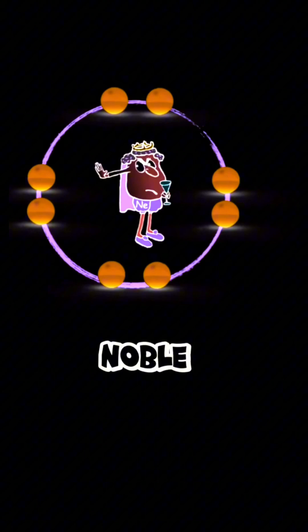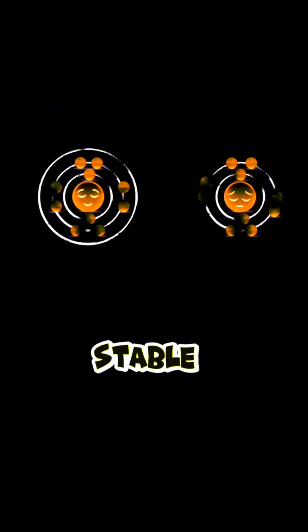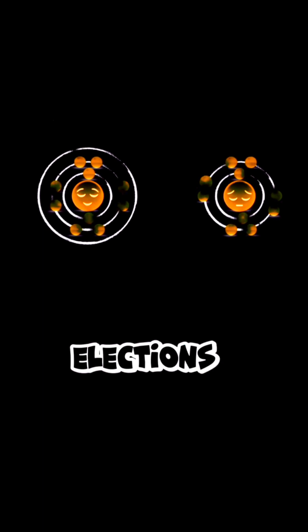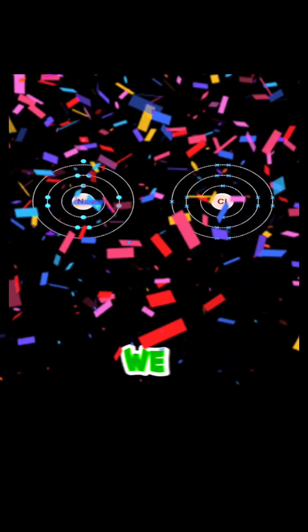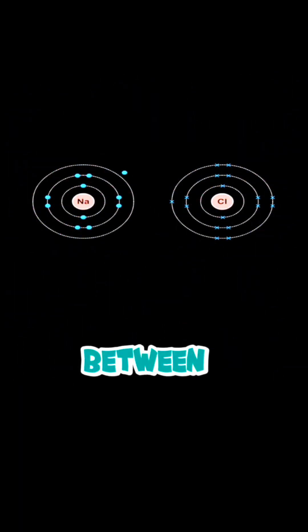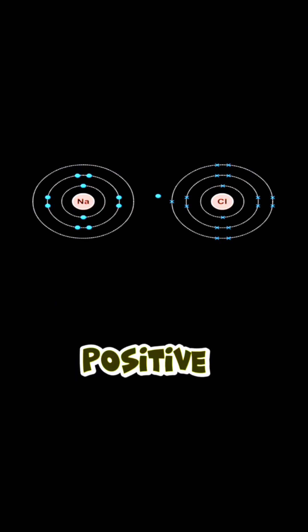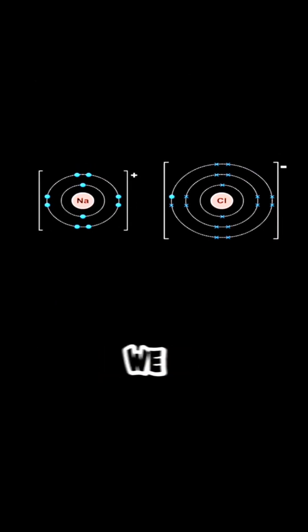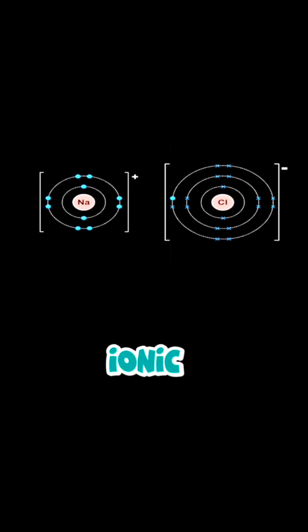In this case, sodium would become stable because now it has eight valence electrons, and so does fluorine. The attraction between the positive ions and the negative ions is what we call an ionic bond.